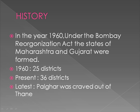A brief history about Maharashtra: by the Bombay Reorganization Act, the states of Maharashtra and Gujarat were created in the year 1960. In the year of 1960, there were 25 districts in Maharashtra, but the present number is now 36. The latest district which was created is Palghar, which was separated from the district of Thane, one of the most populous districts in India.